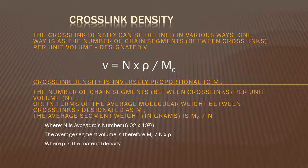It's like that. So here, there are a lot of ways to find the cross-link density. One way is the number of chain segments between cross-links per unit volume. They are in a formula equation here.